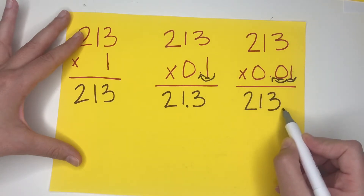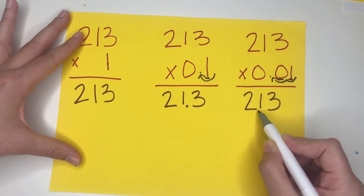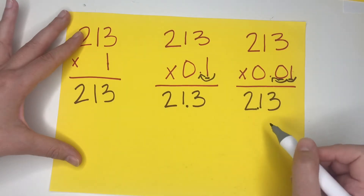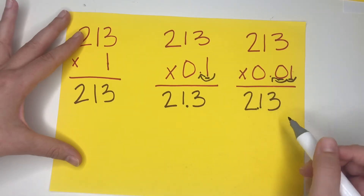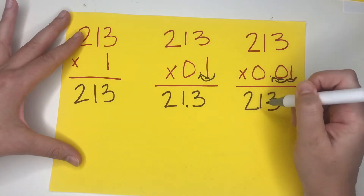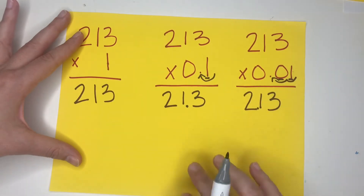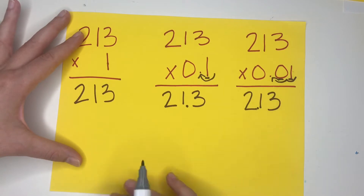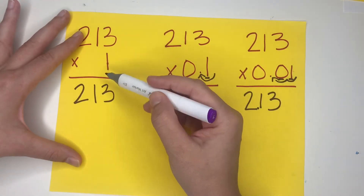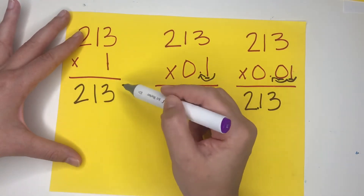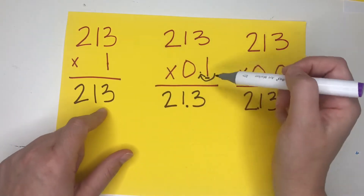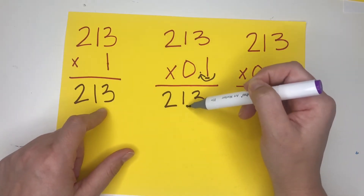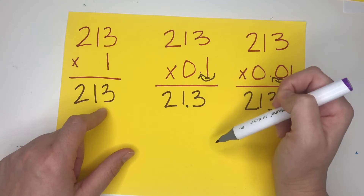So that means we are going to hop twice — one and two — and that means this number is 2 and 13 hundredths. I wanted to notice the pattern here: whenever we multiply by 1, we get the number itself, but when we multiply by one-tenth, we hop one decimal place over.